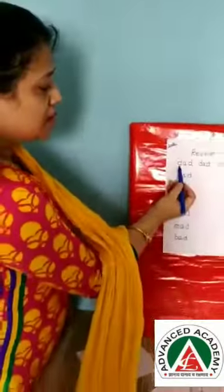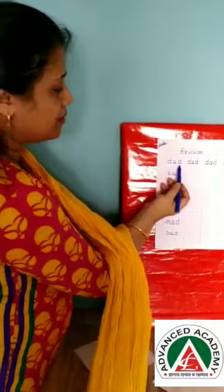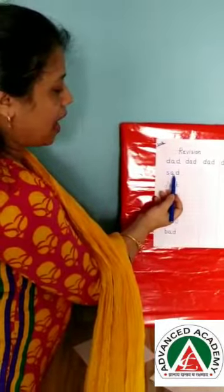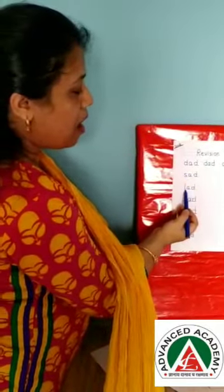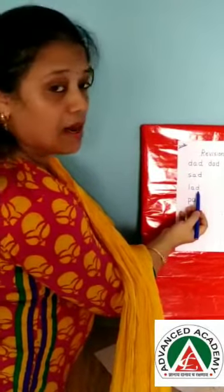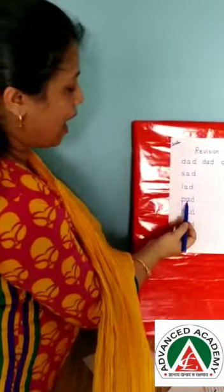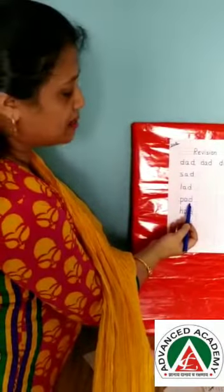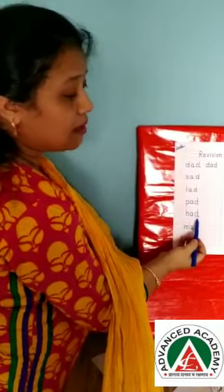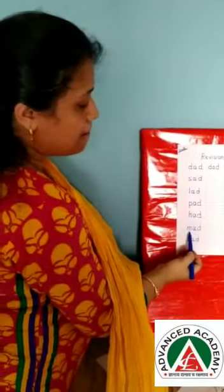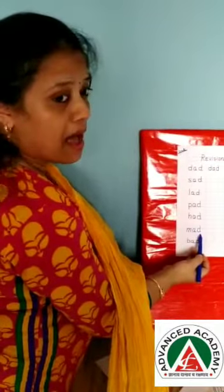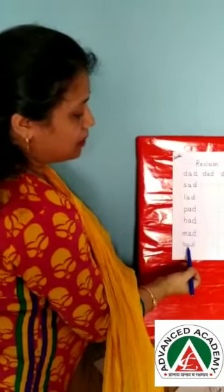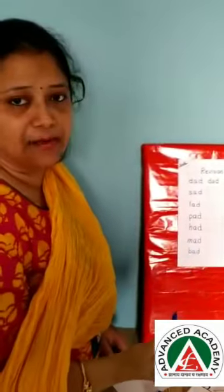Just see: D, A, D — Dad. S, A, D — Sad. L, A, D — Lad. P, A, D — Pad. H, A, D — Had. M, A, D — Mad. B, A, D — Bad. It's a request to all the parents to please guide your children to read the words through phonics. As I am saying it, it will be helpful for your child to read in future.